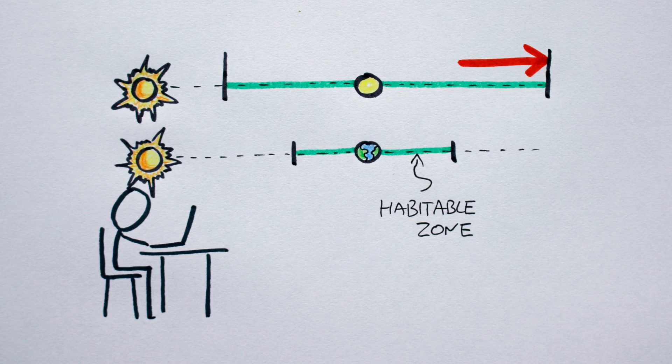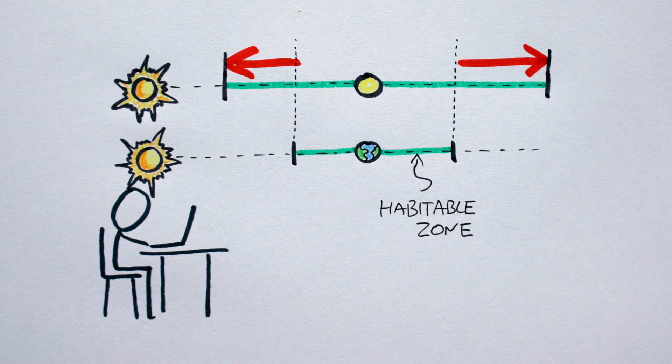Similarly, less heat will be trapped, helping the planet avoid a runaway greenhouse effect, in essence expanding the inner boundary of its habitable zone as well.